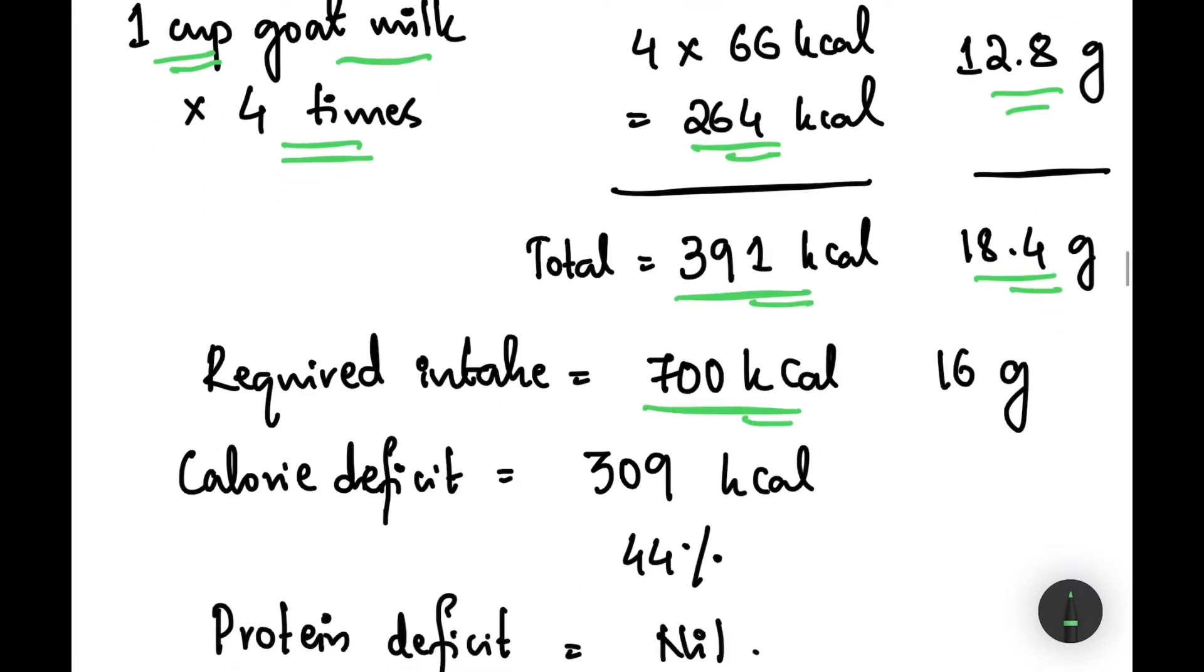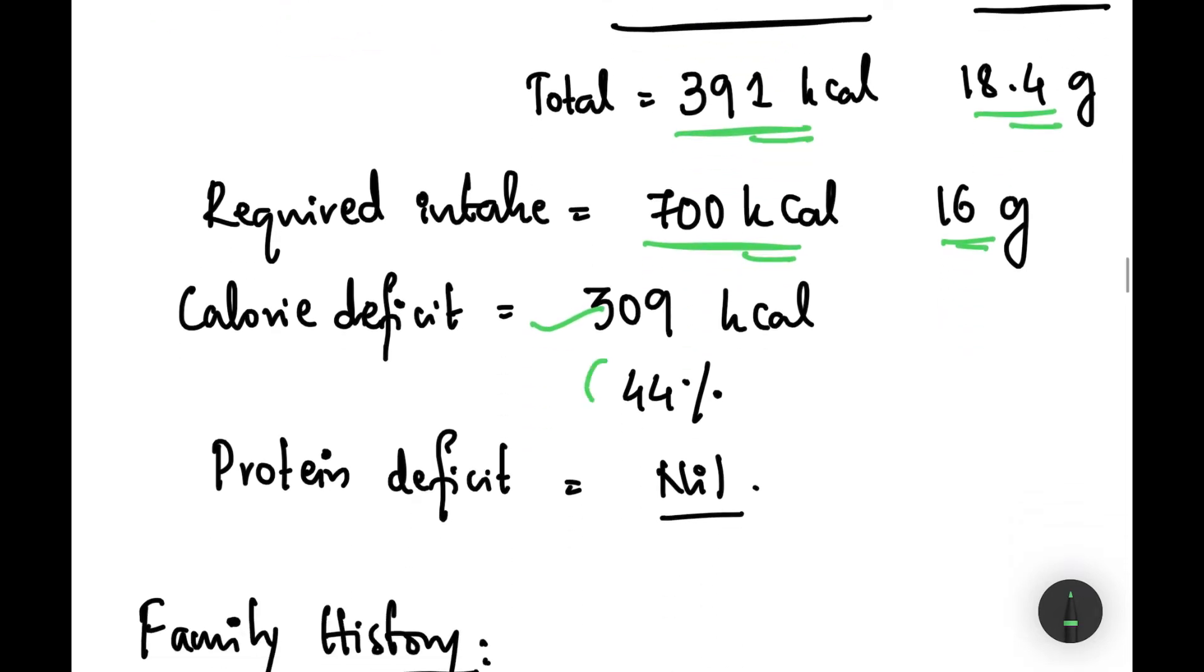The required intake is 700 kilocalories and 16 grams, but calorie deficit is 309 kilocalories which accounts up to 44 percent and protein deficit is nil.